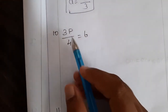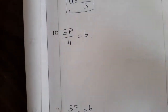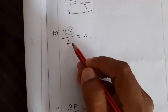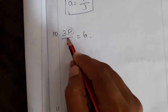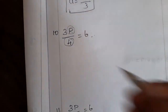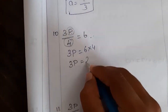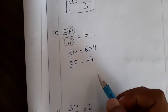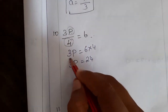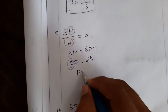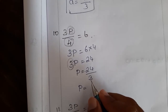Next problem: 3p by 4 is equal to 6. Here, 3 is multiplied with p and the whole thing is divided by 4. We need to find the value of p. First we will take the division to that side — it will become multiplication. So 3p is equal to 6 into 4, which is 24. Now, 3 is multiplied with p, so the 3 can be transposed to the next side and it will become division. So p is equal to 24 divided by 3, which is 8.